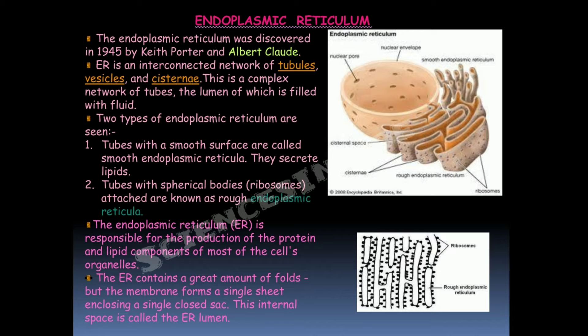The endoplasmic reticulum was discovered in 1945 by Keith Porter and Albert Claude. It is an interconnected network of tubules, vesicles, and cisternae whose lumen is filled with fluid. There are two types: smooth endoplasmic reticulum, which secretes lipids, and rough endoplasmic reticulum, which has ribosomes attached on its surface.